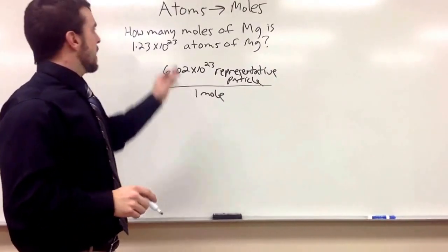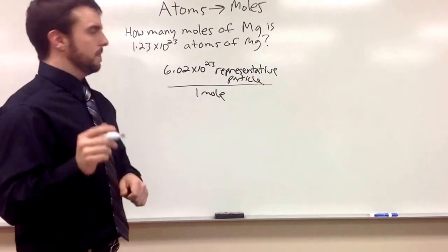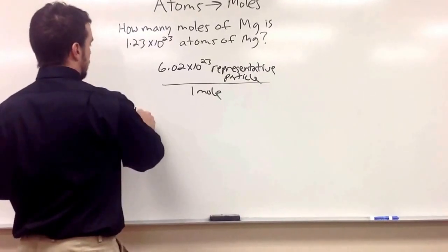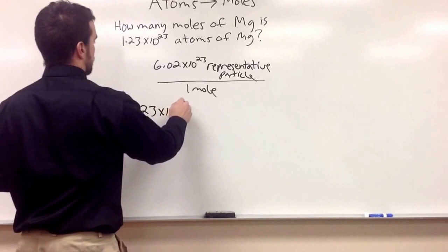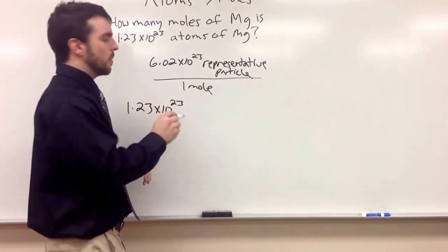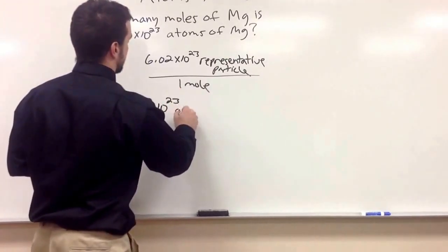So now that we know this, we have our conversion factor, know the atoms, we can do the problem. So first, write down what you know. So we got 1.23 times 10 to the 23rd atoms of magnesium.